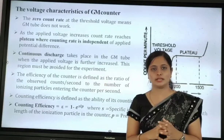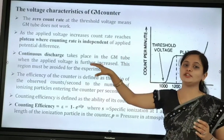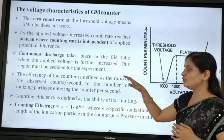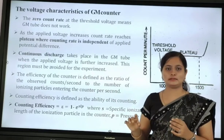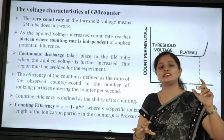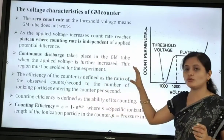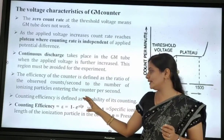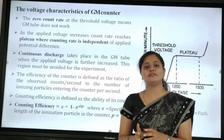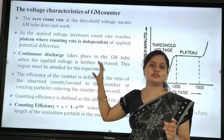Next, the efficiency of the GM counter is defined as the ratio of the observed count per second to the number of ionizing particles entering the counter per second.